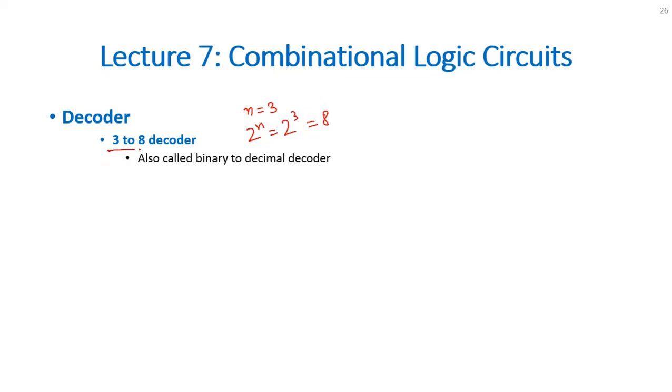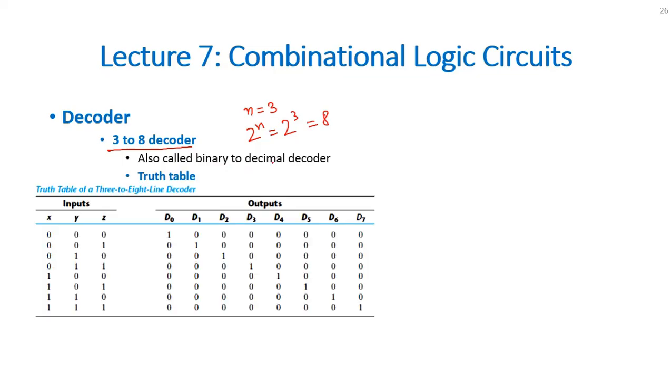That is why we call it 3 to 8 decoder. Also called binary to decimal decoder. Its truth table is given here.